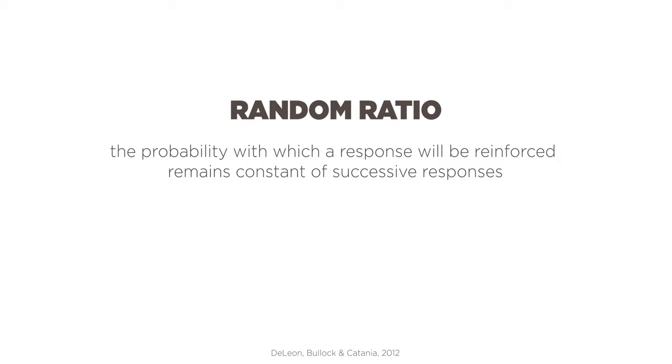The one I want to talk about specifically is random ratio, which is a subtype of variable ratio where the probability with which a response will be reinforced remains constant across successive responses. With a VR 20, the probability of reinforcement becomes more and more likely with each response, varying around 20. However, with a random ratio 20, think of it like a random generator — there's a five percent chance of payout that resets each and every time you respond. Theoretically, you could engage in a random ratio 20 forever without it paying off — that's not the case with a VR schedule.